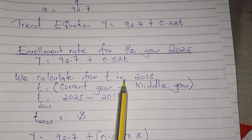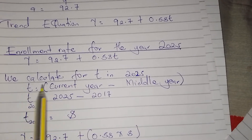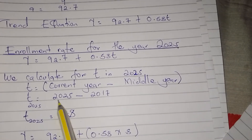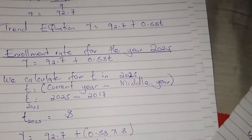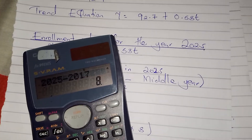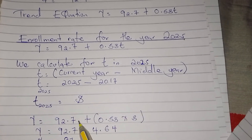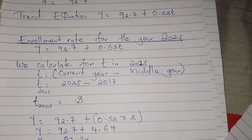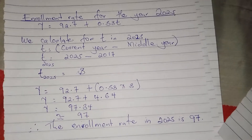We calculate t for 2025 using t equals current year minus the middle year. From the table our middle year was 2017, and the current year is 2025, so t equals 2025 minus 2017 equals 8. We then substitute t equals 8 into the trend equation to get the enrollment rate for 2025.